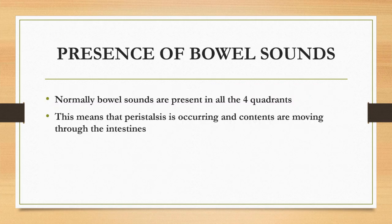There are three things you have to look for while auscultating the abdomen. The first one is presence of bowel sounds, the second one is frequency of bowel sounds, and the last one is quality of bowel sounds. Normally, bowel sounds are present in all four quadrants, which means peristalsis is occurring and contents are moving through the intestine.